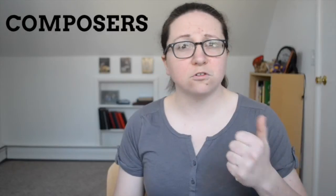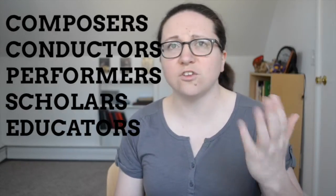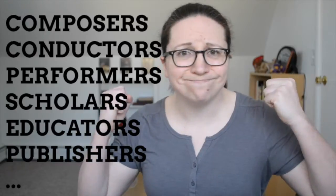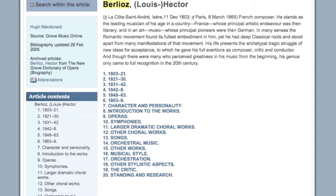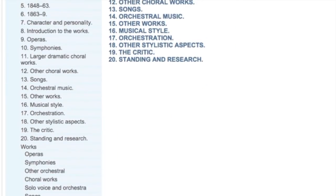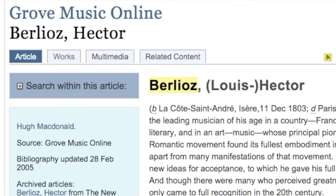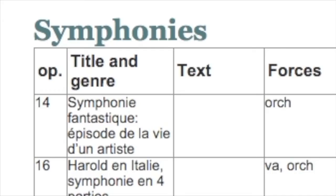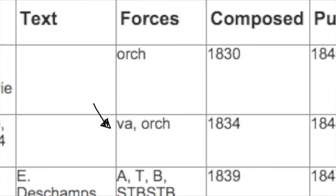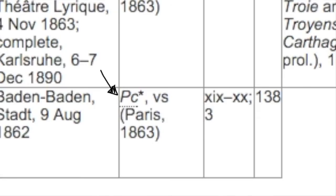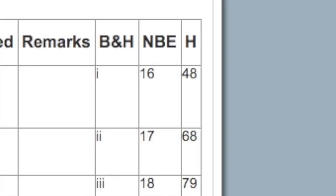Biographical entries are for people — so composers, conductors, performers, scholars, educators, publishers, you name it. Biographical entries contain the article which discusses the person, and if it's a long one like this for Berlioz, it'll be broken down into sections in the left-hand menu. Composer entries contain works lists which provide a wide variety of information including catalog and opus numbers, performance forces, premiere dates and locations, if a composer has a collected edition, how to find a particular work within it, and more.